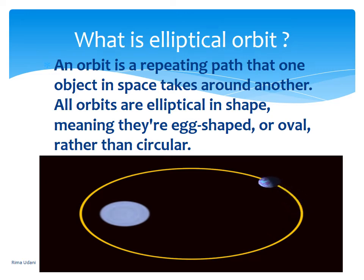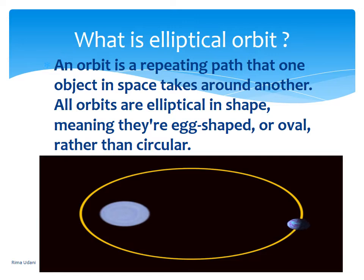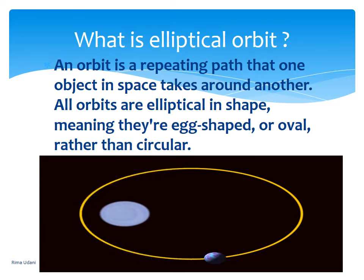An orbit is a repeating path — it goes on and on — that one object in space, such as the earth or any other planet, takes around another. All orbits are elliptical in shape, meaning they are egg-shaped or oval-shaped rather than circular. This is known as the elliptical orbit.